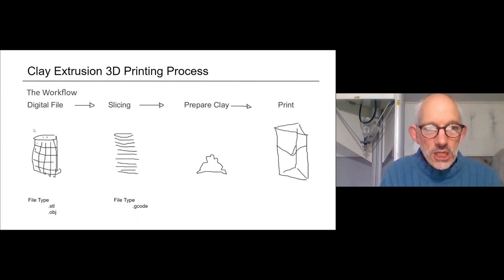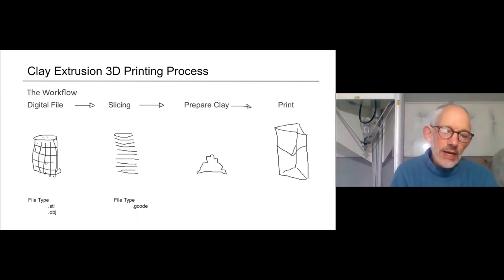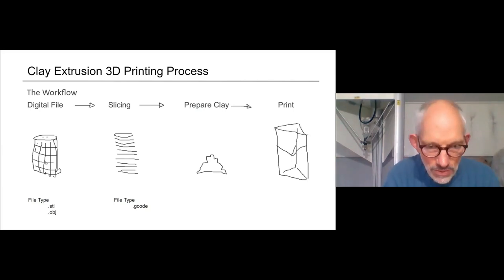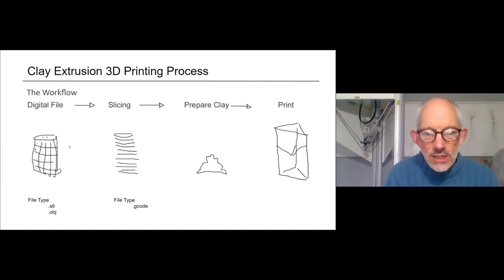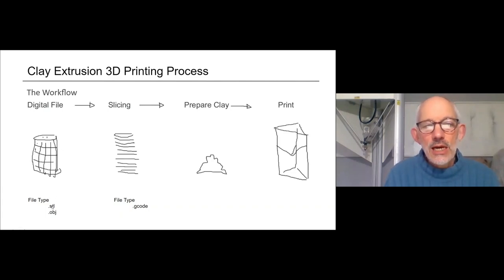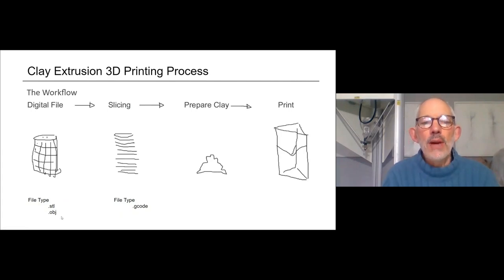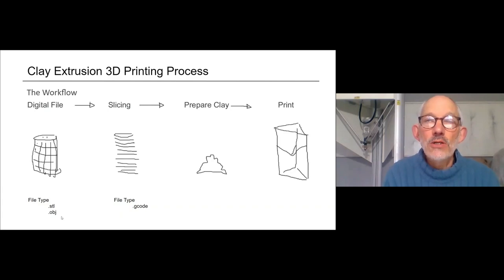So now you've got your digital file. Obviously if you work in Blender it's going to be a Blender file, Rhino it's going to be a Rhino file. Any other program — most packages have their own file type. So you need to find the export button, and you export it as either an STL or an OBJ. STL and OBJ have become like the generic 3D files, a bit like JPEG is for photography.